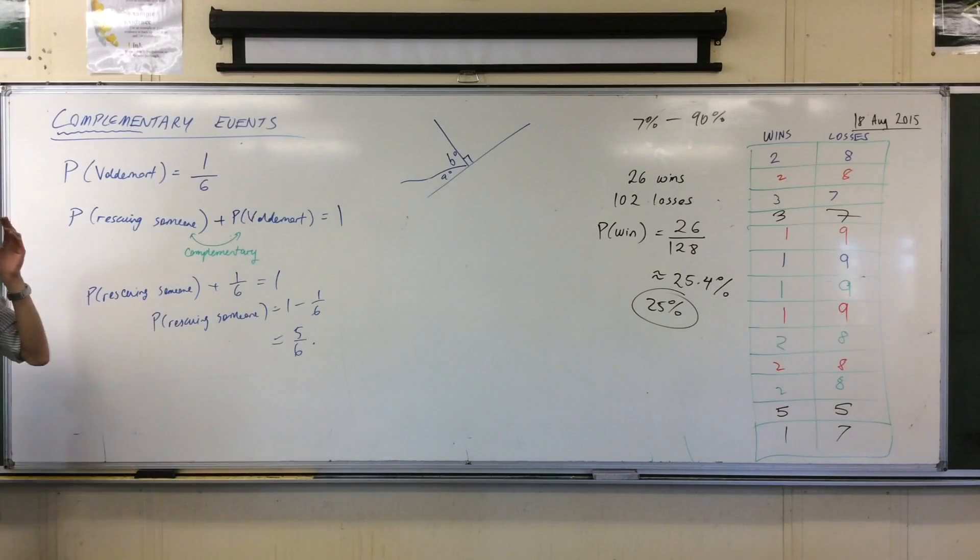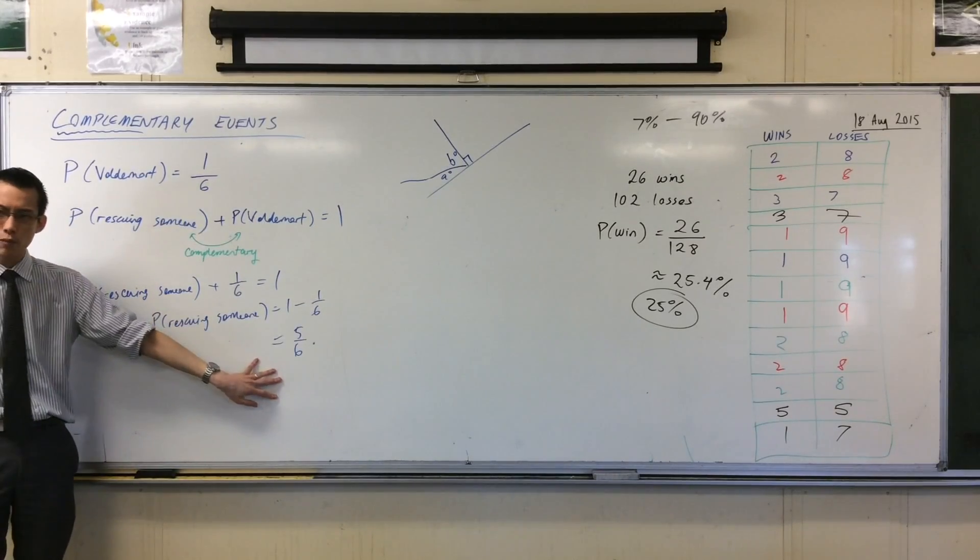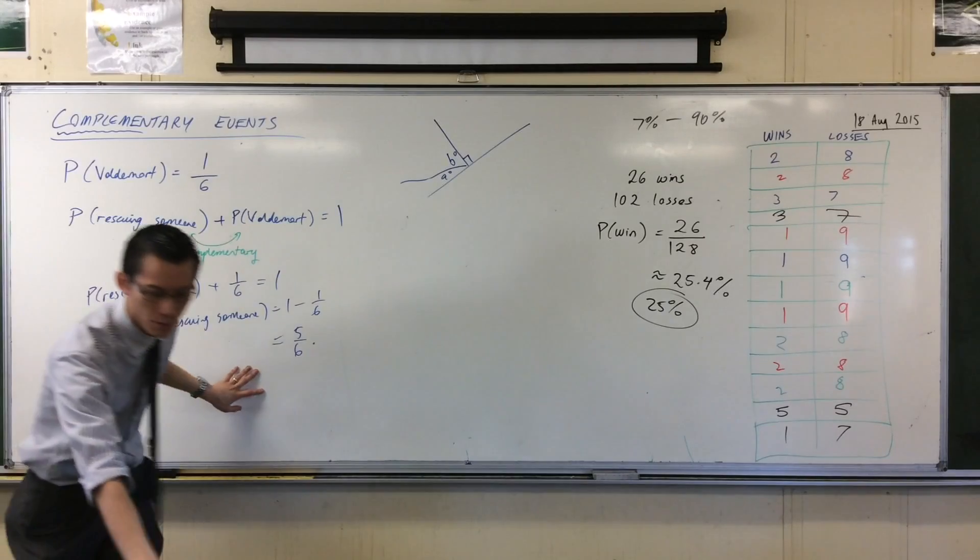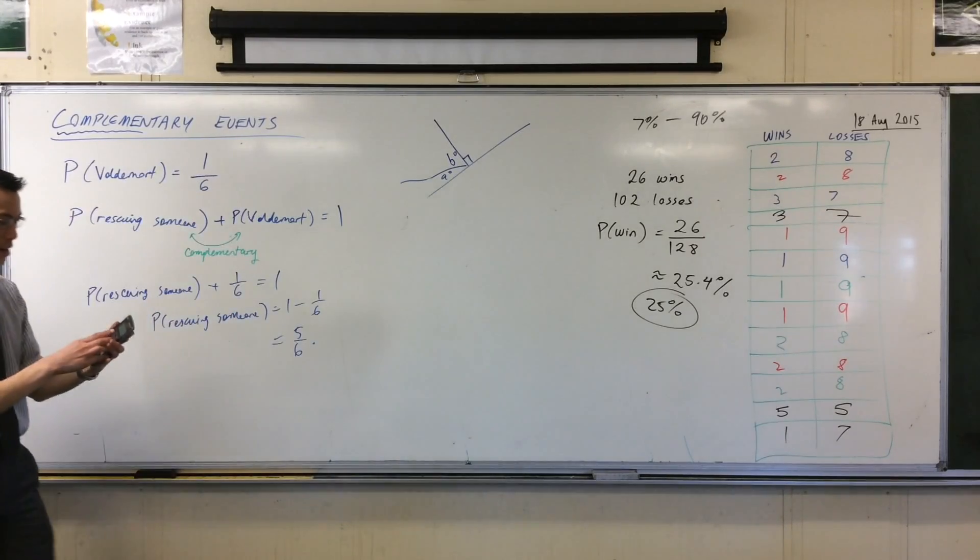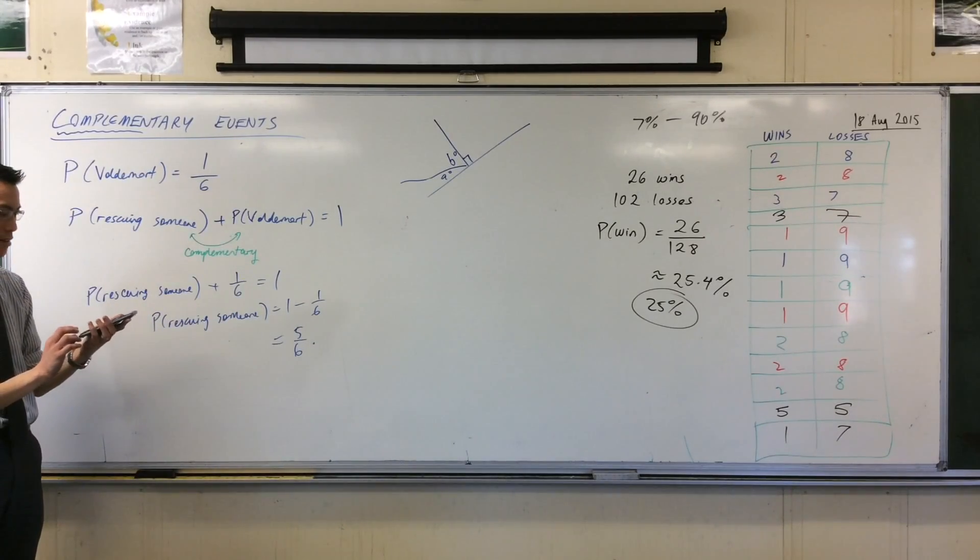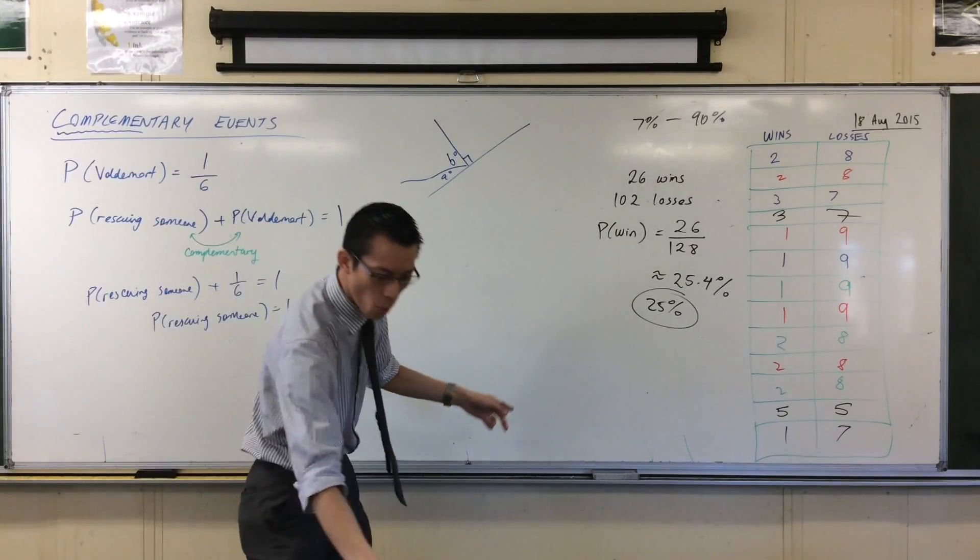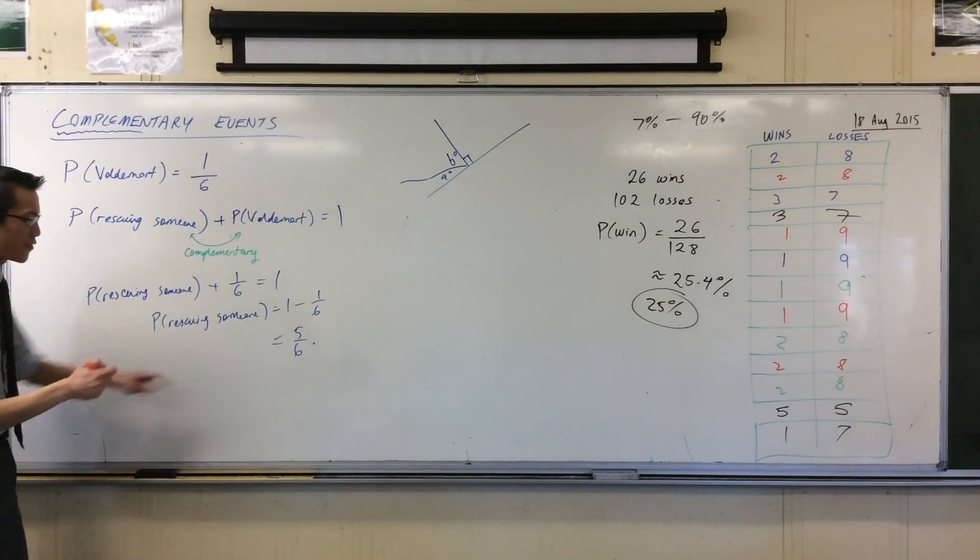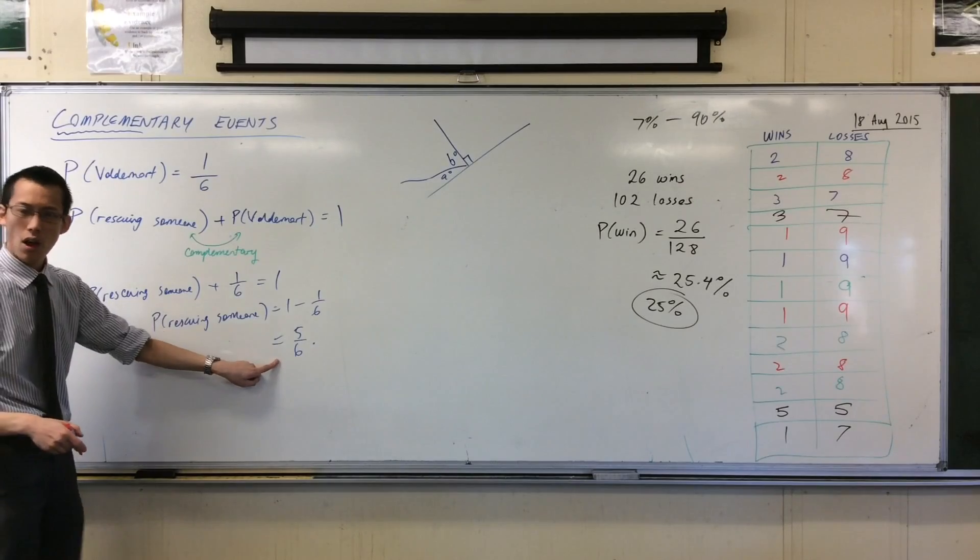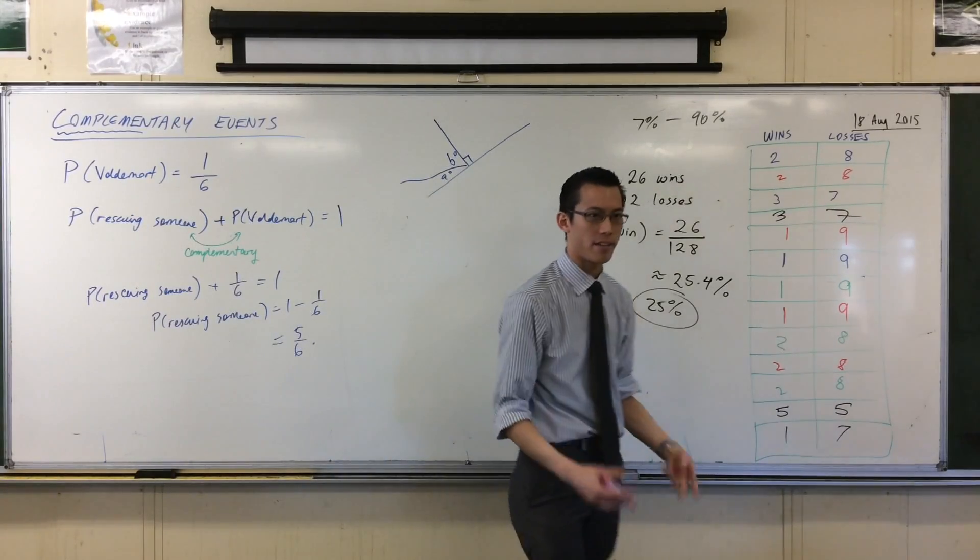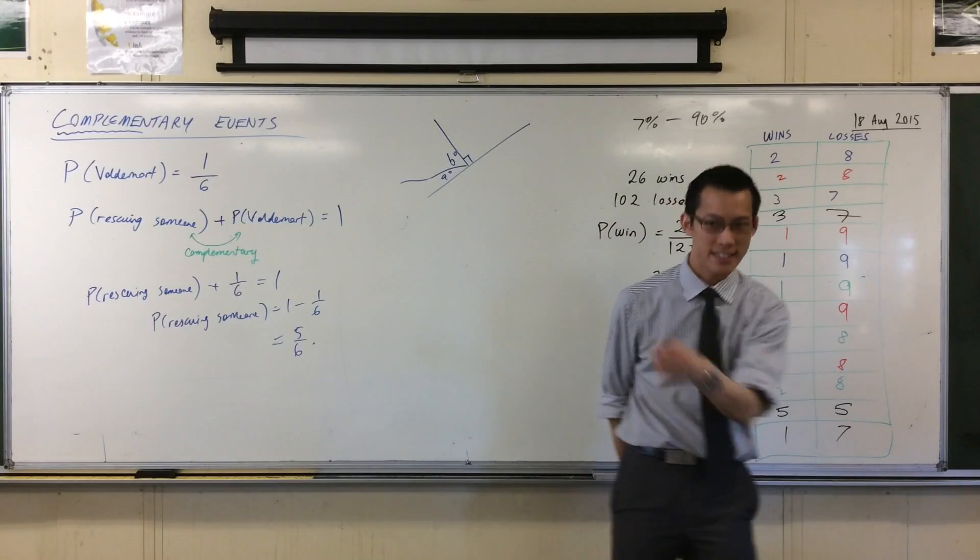Now a quick rhetorical question. If the probability of rescue is 5 over 6, that's quite high. If you crunch the number on your calculator, that's like 80-something, 84%. So why is it, if this is 84%, why is it the probability of actually winning the game is not 84%? Daniel, what do you think?